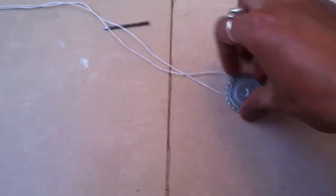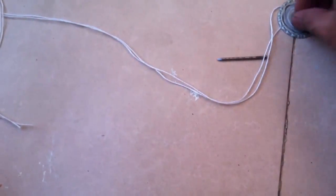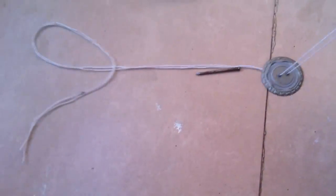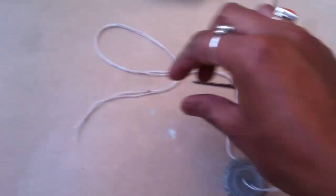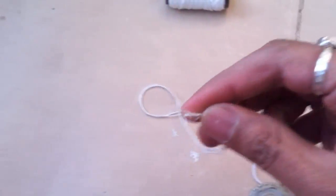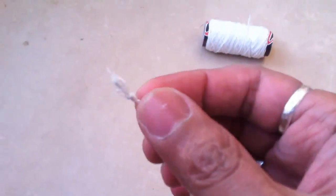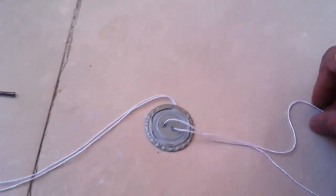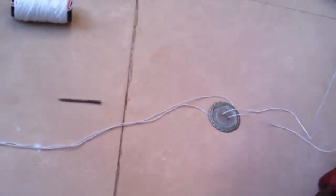As you can see, I have inserted the thread inside these holes. Now at the end you need to make a knot, so there is a knot at the end. So now your pull string toy is ready. Let's play it.